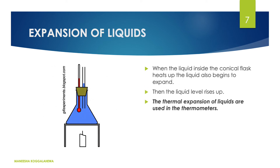Now expansion of liquids. Here you can see there is a conical flask filled with water, a capillary tube, and a thermometer. After heating, the liquid level in the capillary tube goes up. After heating, the liquid particles absorb heat and are subjected to expansion. When the liquid inside the conical flask heats up, it begins to expand and the liquid level rises. This thermal expansion of liquid is also used in thermometers, where the liquid inside rises as temperature increases.